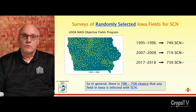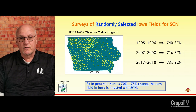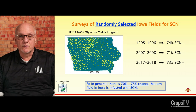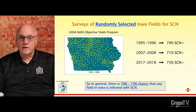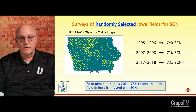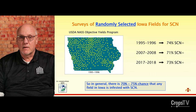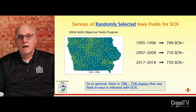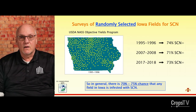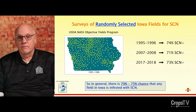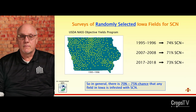Two take-home messages: if you're growing soybeans, there's about a 70 to 75% chance your field has SCN. And the intriguing question is — what's up with that 25 to 30% of fields where we've not detected it? Is there something about the biology or the microbes in the soil that are suppressing SCN? We don't know. But practically speaking, there's a three out of four chance any Iowa soybean field has SCN.